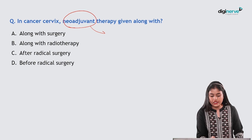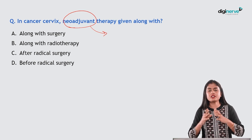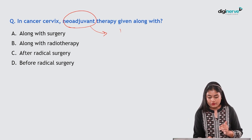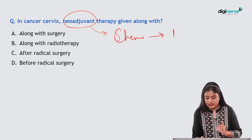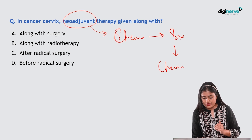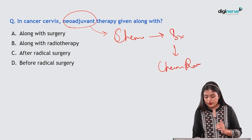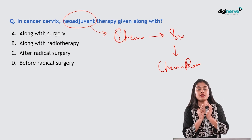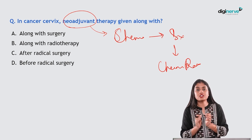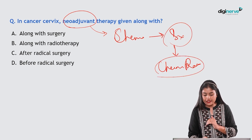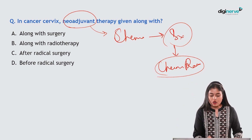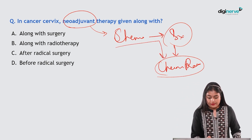Next question: in cancer cervix, what is neoadjuvant therapy given along with? Neoadjuvant means the tumor has grown so large that surgery cannot be done immediately. Chemotherapy is given first to reduce tumor size, making surgery feasible, followed by surgery and then chemo-radiation. This sequence is called neoadjuvant therapy.